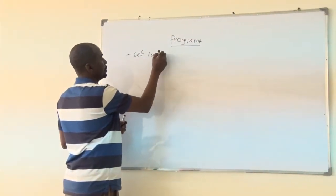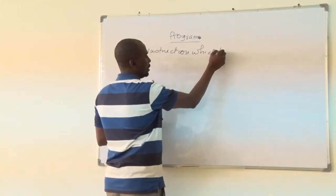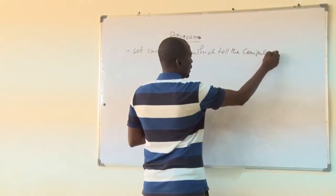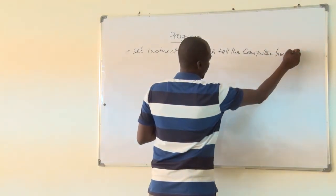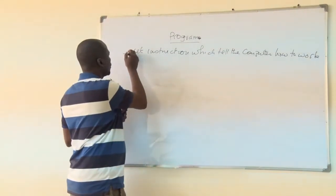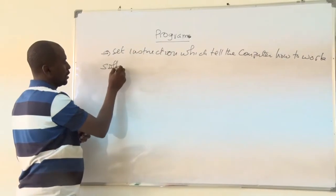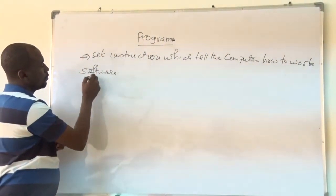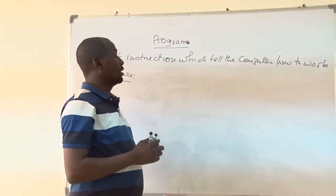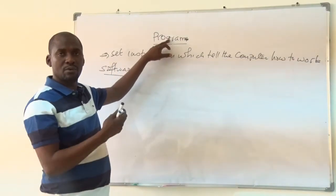A program is a set of instructions which tell the computer how to work or what to do. In computing, we have another word known as software. Sometimes we take software as a program, and the words software and program can be used interchangeably.